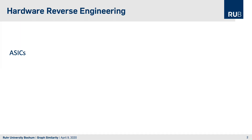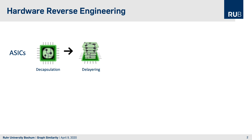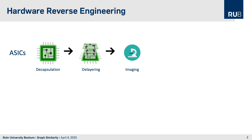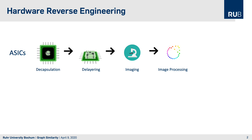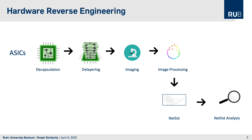The process of hardware reversing can be split for two technologies. First of all there are the ASICs, the application specific integrated circuits. Here we first decapsulate an integrated circuit, then we de-layer it, then we take images of each layer and finally post-process all images to form a textual representation of the netlist which can then be used for further netlist analysis.